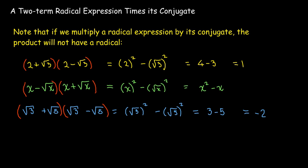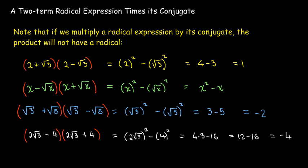Now I have to be careful if I have a number outside the radical — I need to remember to square both things. So 2 squared will be 4, and radical 3 squared will be 3, so 4 times 3 gives me 12. Then 12 minus 4 squared gives me negative 4.